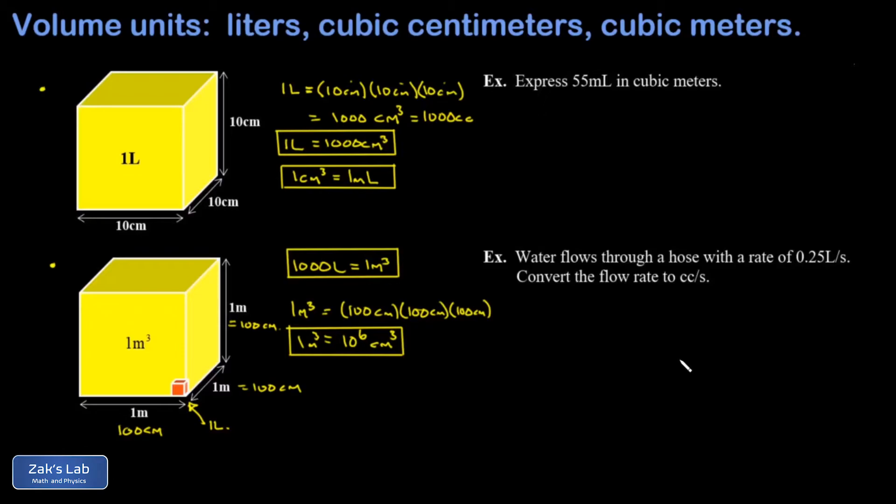Let's wrap things up with a couple simple examples. In the first one, I'm asked to express 55 milliliters in cubic meters. And so the first step here is just to get into the units we would typically use in physics. So a milliliter is a cubic centimeter. Then I multiply by a conversion factor in order to get to cubic meters. Well, I just wrote down that one cubic meter is 10 to the sixth cubic centimeters. The cubic centimeters cancel. And I'm left with 5.5 times 10 to the negative fifth cubic meters.